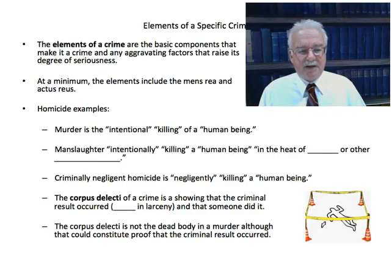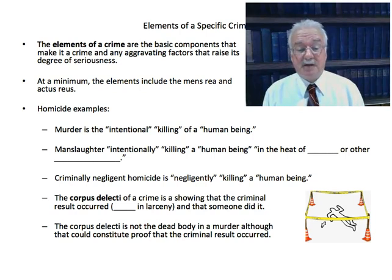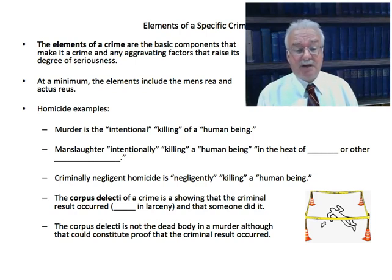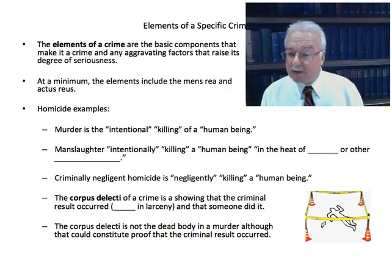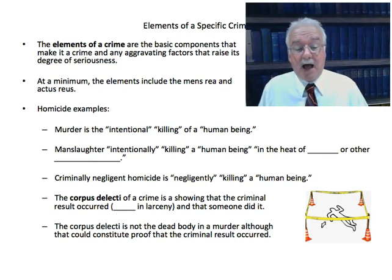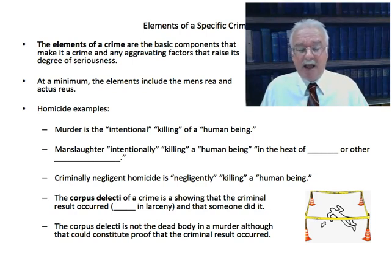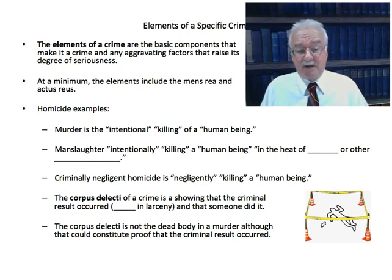Finally, let's talk about how we put this together in terms of the elements of a specific crime. The elements of a crime are the basic components that make it a crime, plus any aggravating factors that might raise the degree of seriousness. At a minimum, the elements include mens rea and actus reus, unless it's a strict liability crime. There is no actual crime simply called homicide — homicide is the general title for a collection of crimes where somebody dies: murder, manslaughter, and criminally negligent homicide.